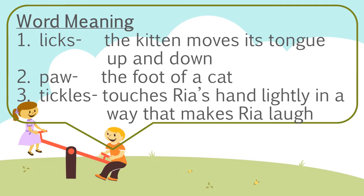First is licks. What do you mean by lick? As we have studied in the chapter, Riya's kitten licks her hand. So we understand that the kitten moves its tongue up and down. The meaning of licks in this chapter is: the kitten moves its tongue up and down.